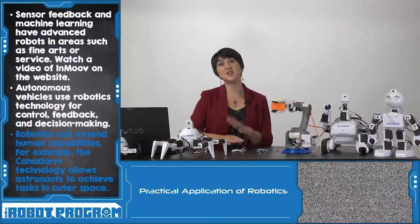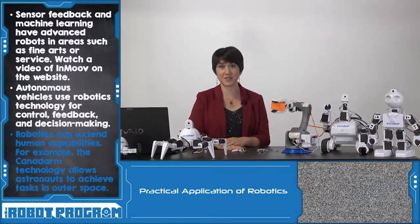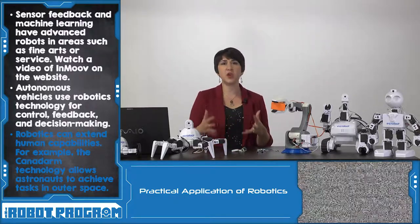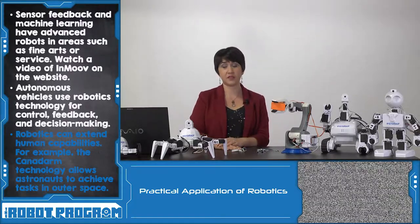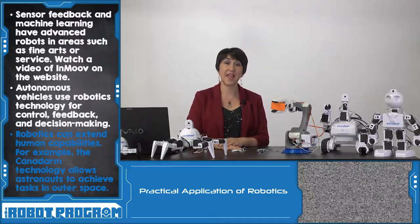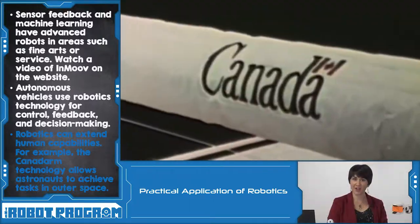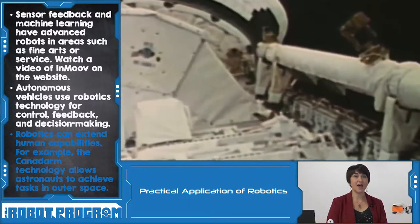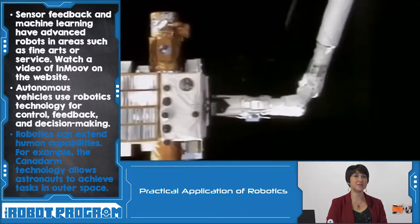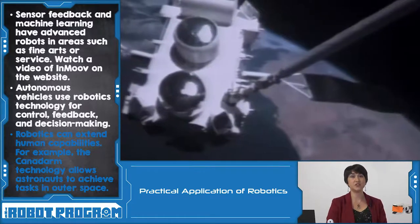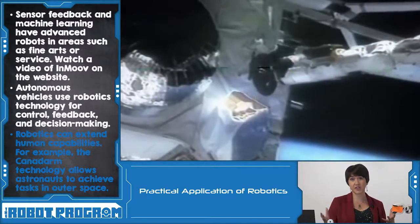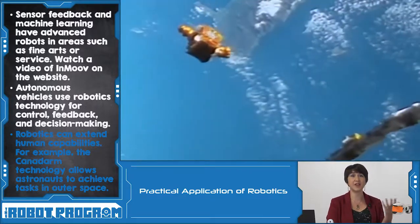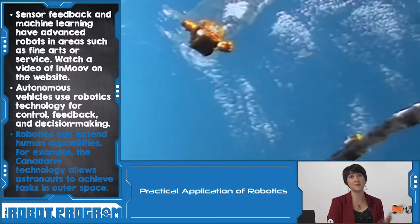Robotics can be used to extend human capabilities, including grabbing things, holding things, even things beyond human strength. A great example of this is the Canadarm — also called the Space Station Remote Manipulator System — which allows crew members of the International Space Station to achieve tasks on a large scale that normal humans wouldn't be able to do, especially in a harsh environment such as space.